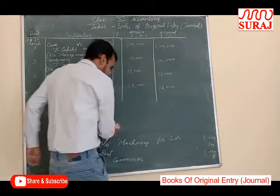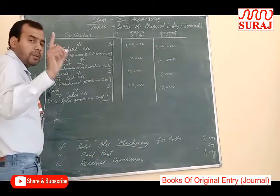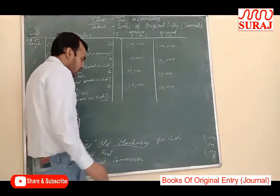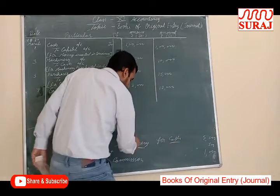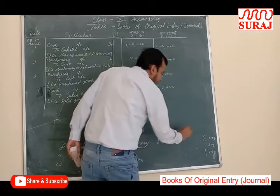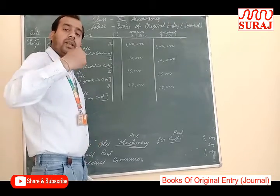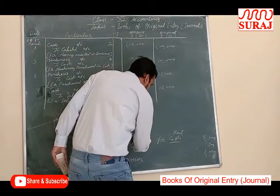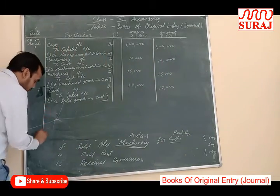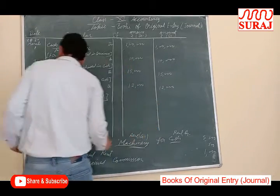Next transaction: Sold Old Machinery for Cash. Along with sold, machinery is used, so we use the asset account — not sales. In this transaction, the entry will be through machinery and cash accounts. Machinery is a real account; cash is a real account. Real account rule: debit what comes in, credit what goes out. The machine is sold — machinery goes out from the business, so machinery will be credited. Cash comes in, so cash will be debited. Entry: Cash debit, Machinery credit, Rs. 5,000.